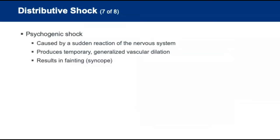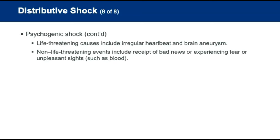The fourth type of distributive shock is psychogenic shock, which involves a sudden reaction of the nervous system that produces a temporarily generalized vascular dilation, usually resulting in a syncopal episode. Life-threatening causes include irregular heartbeat or brain aneurysm, while non-life-threatening events include hearing bad news, experiencing fear, or seeing something unpleasant such as blood.